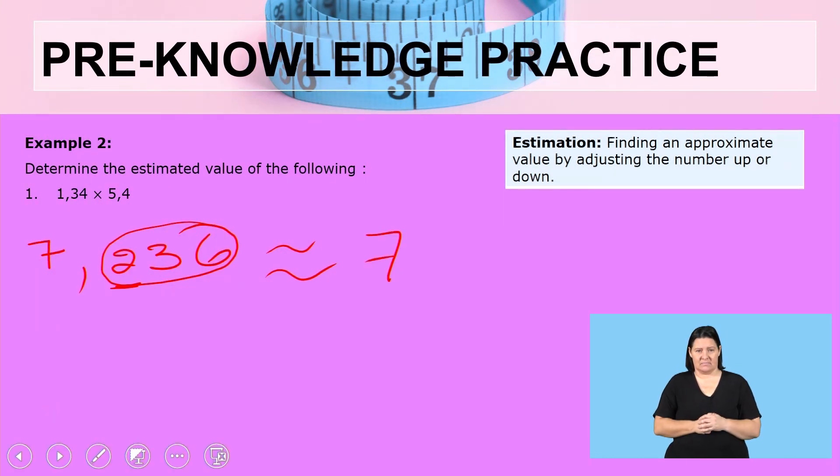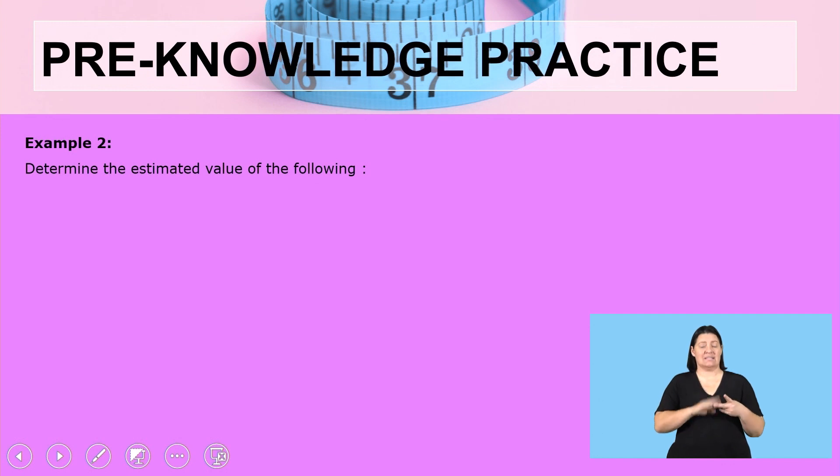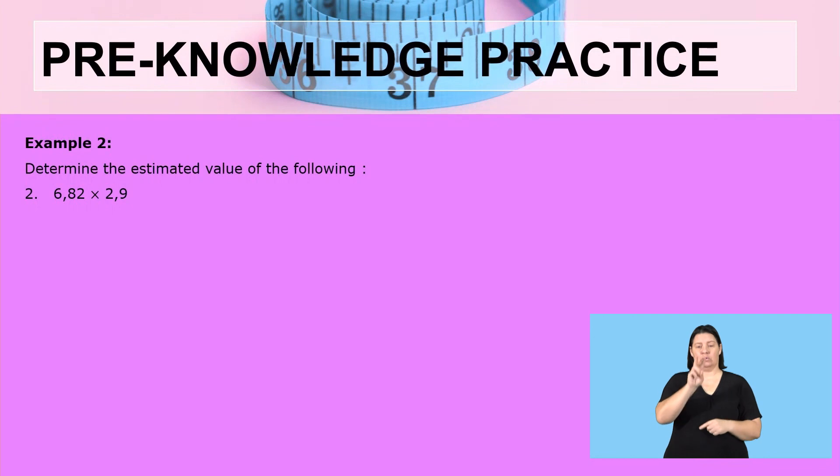Let us have a look at the last example. We are having 6,82 × 2,9. Let us get the answer together. Press your calculators. I'm having 6,82 multiplied by 2,9. The answer that I'm getting is 19,778. Because 7 after the comma, the first value after the decimal is greater than 4, from 5 upwards,